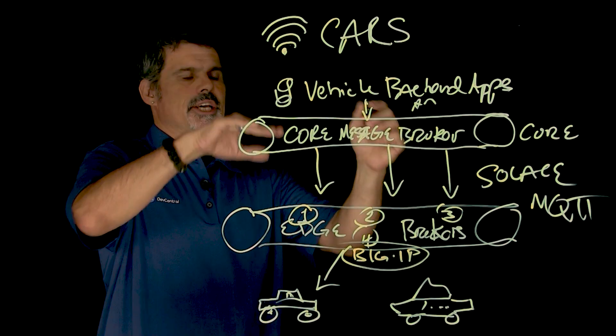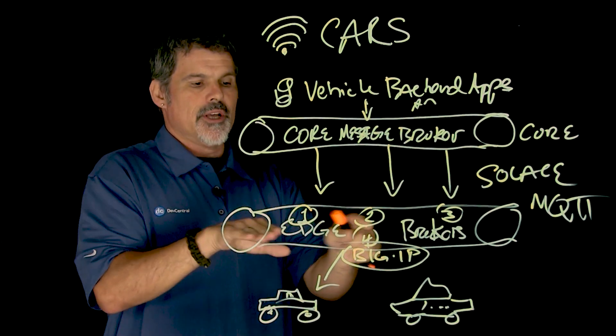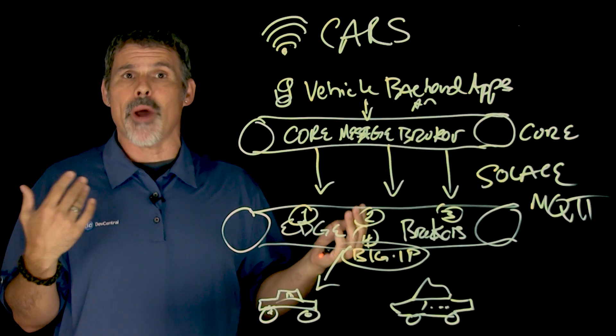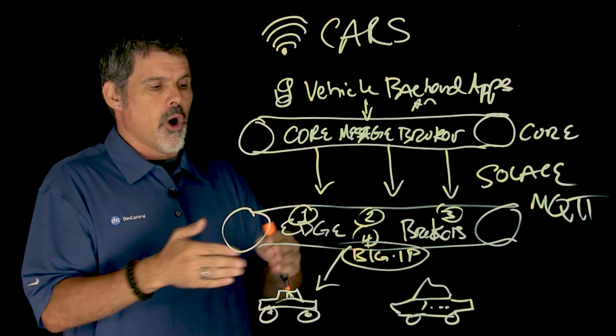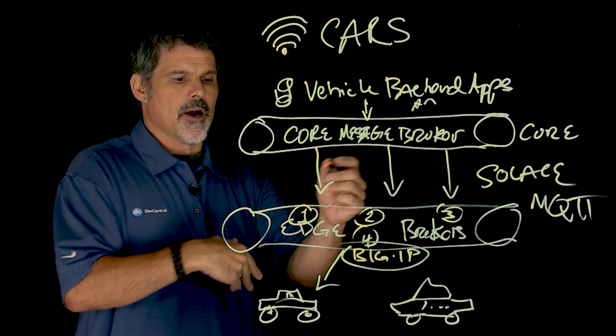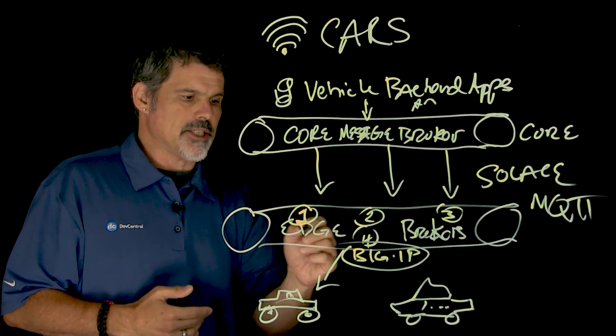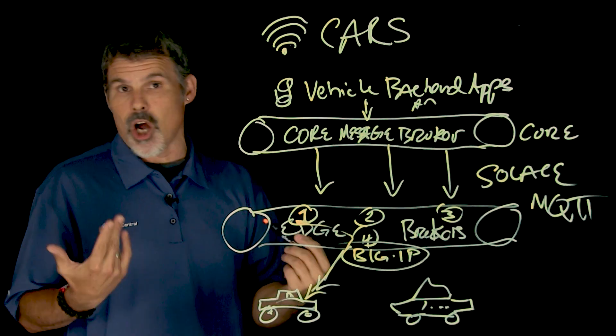So, as the message comes down, the core message broker then tells the edge message brokers, here's a software update for these particular vehicles that are out there. The software update, say, comes to message broker one,